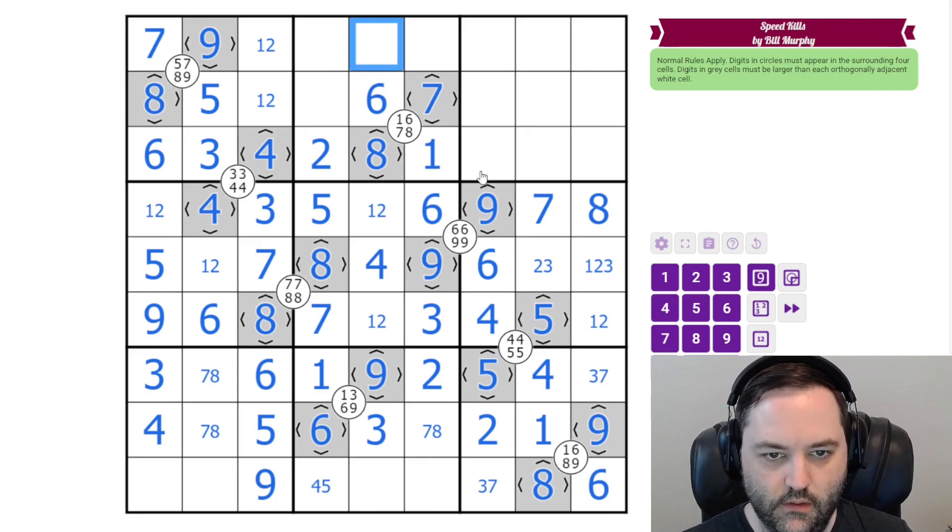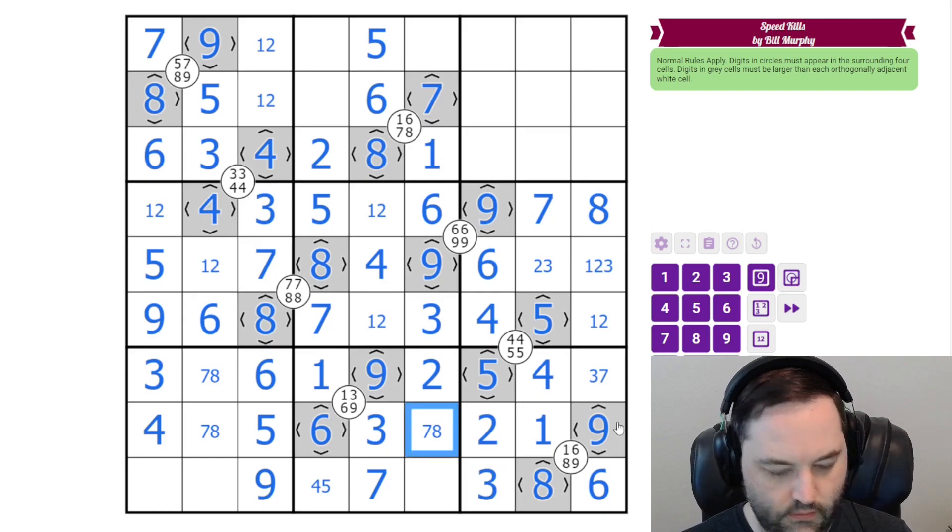So this is 5 and 7. This one has to be the 5, 7. This is 3, 7. This is 8, 7, 8.